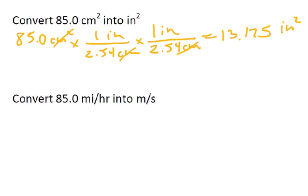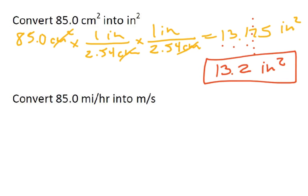I have three significant figures. I'm going to take this number here. I want the 1, the 3, and the 1. Because that next number is a 7, I'm going to round that up. So my answer will be 13.2 inches squared. I can notice that this is a squared unit, so I had to use my conversion twice.